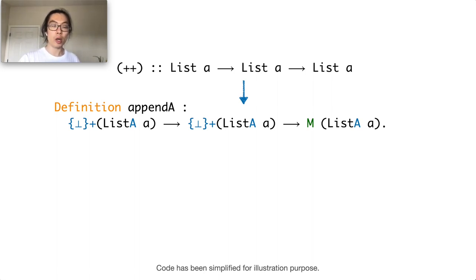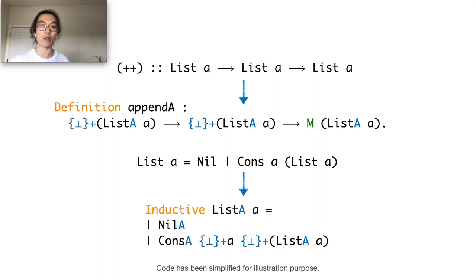Furthermore, we also redefine list as what we call the approximation of a list. The approximation of a list also augments all the values inside it with a possibly undefined value.